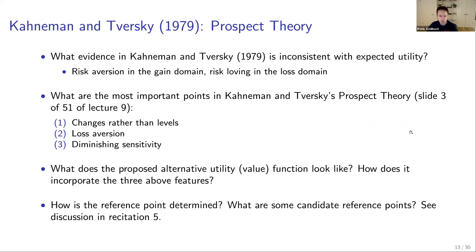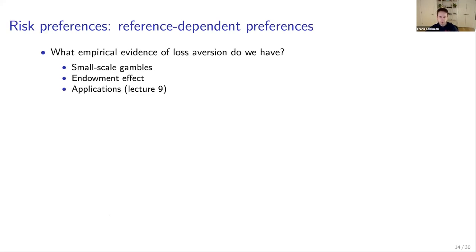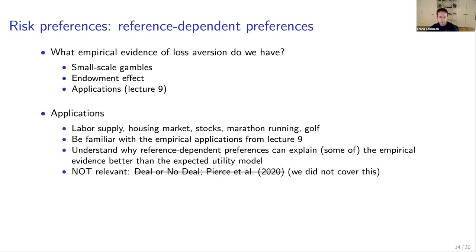You should understand what the value function looks like and how it incorporates these three features, as discussed in lecture 9. One key question is how the reference point is determined — candidates include the status quo, expectations, or goals and aspirations. Empirical evidence of loss aversion includes small-scale gambles and the endowment effect. Applications discussed include labor supply, the housing market, stocks, marathon running, and golf.